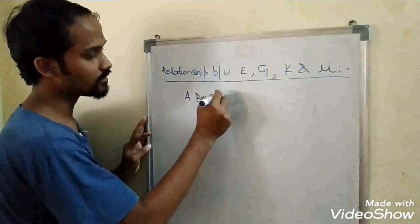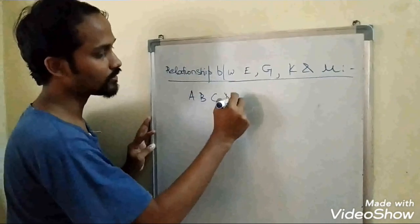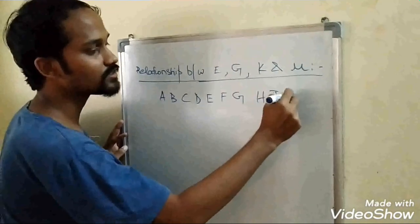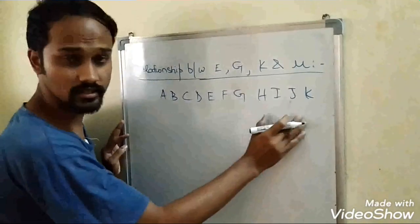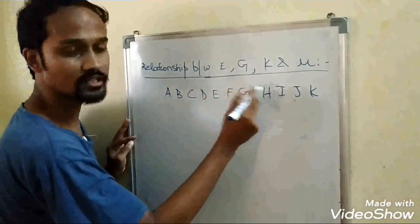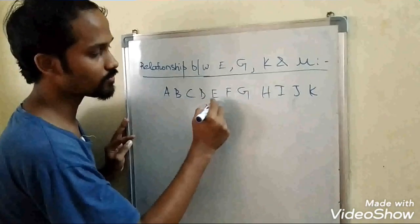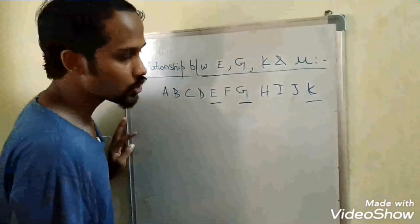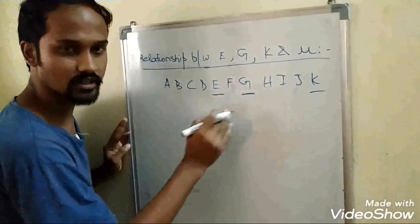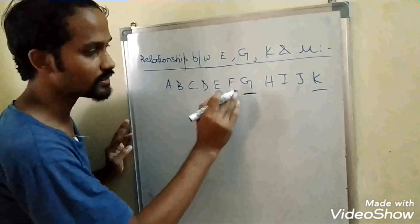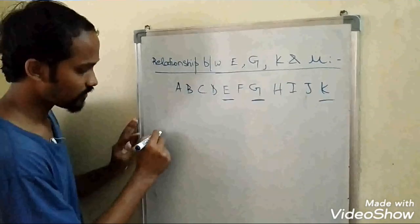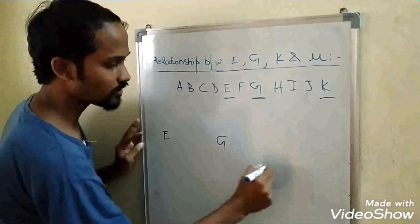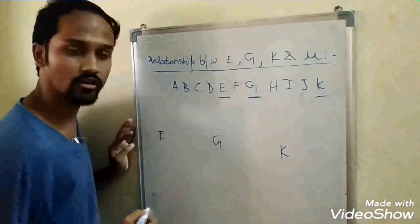As everyone must be aware of the alphabet series like A, B, C, D, E, F, G, H, I, J, K — I am using this to establish the relationship. We need E, G, and K. So I am going to write E, G, and K in order.